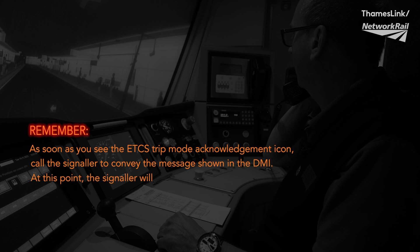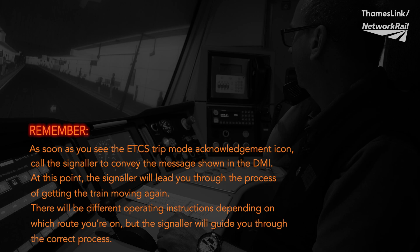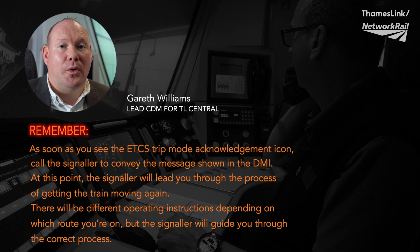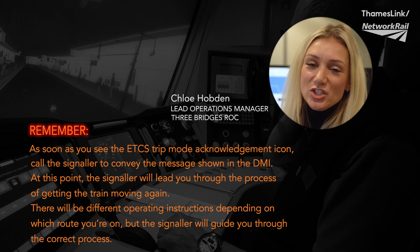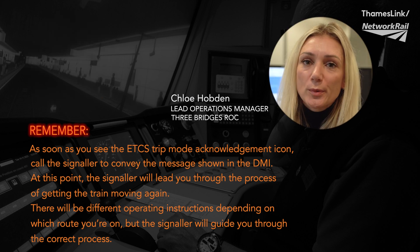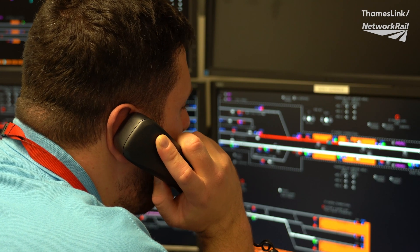Remember: as soon as you see the ETCS trip mode acknowledgement icon, call the signaller to convey the message shown on the DMI. At this point the signaller will lead you through the process of getting the train moving again. There will be different operating instructions depending on which route you're on, but the signaller will guide you through the correct process. Tell the signaller what the message is on the DMI — this is why it's so critical at that point that the message is not cleared. With clear questioning and communications, the signaller will work through with the driver the nature of the trip.